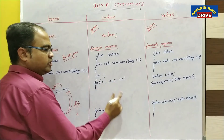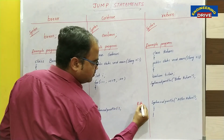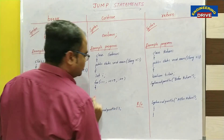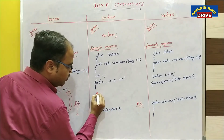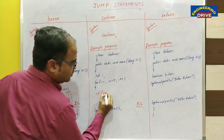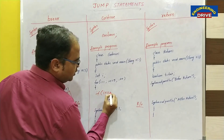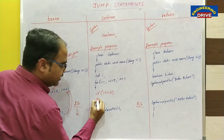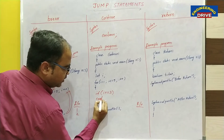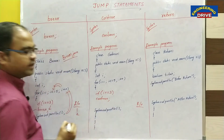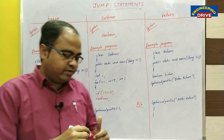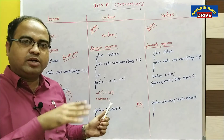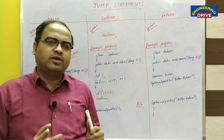In this program also, I want to display 1 to 5 numbers, but I am making a small change. Here, if i equals 3, instead of the break keyword, I am writing continue. So what is the job of the continue keyword? What will it do? Let us see.